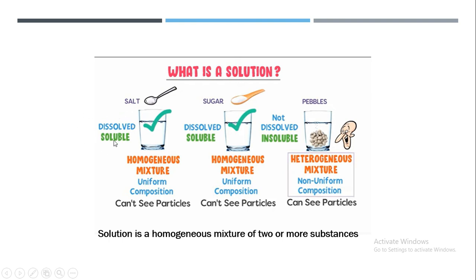The thing that dissolves something is called a solvent, and the thing that is being dissolved is called a solute. Here, water is the solvent and we are dissolving salt and sugar in it. So they make a crystal clear solution — this is a homogeneous mixture where the solute is mixed uniformly and is not scattering in the solution.